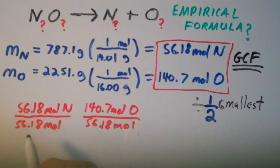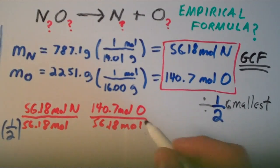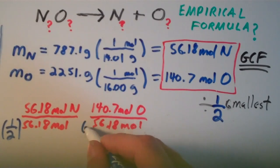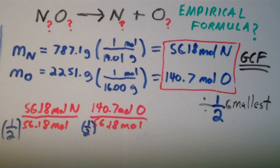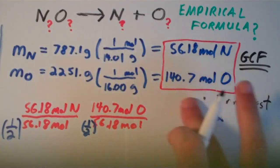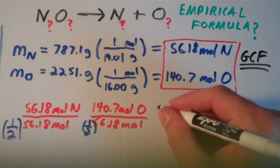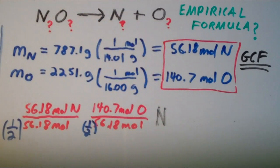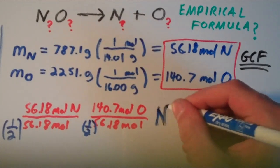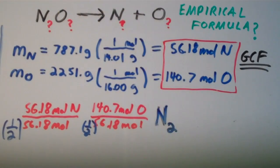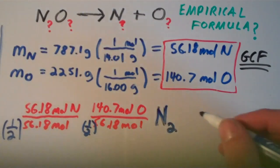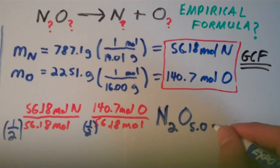We take 56.18 moles of nitrogen and divide by one half of 56.18 moles, and we take 140.7 moles of oxygen and divide by one half of 56.18 moles. Dividing 56.18 by half of 56.18 gives 2, so nitrogen gets a subscript of 2. Dividing 140.7 by half of 56.18 gives a subscript of 5.009 for oxygen.